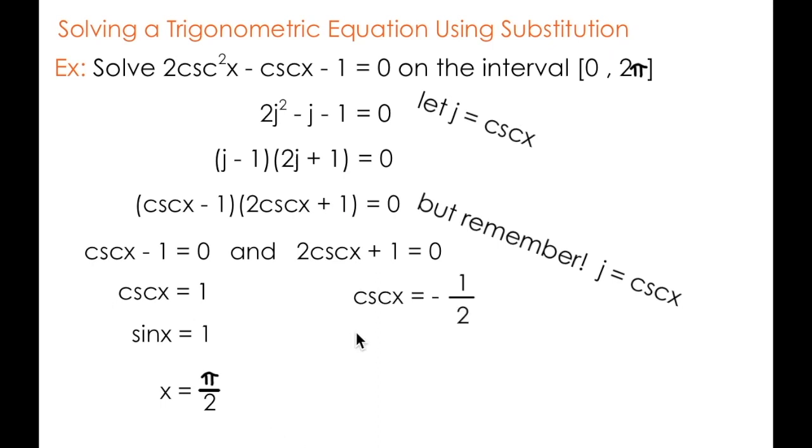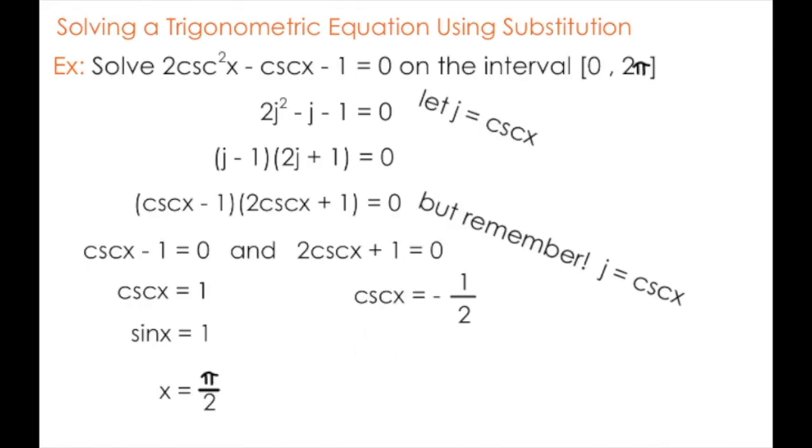Let's look at the equation on the right. I can bring the 1 over to the other side and divide by 2 to produce a slightly simpler equation. The cosecant of x is equal to -1/2.